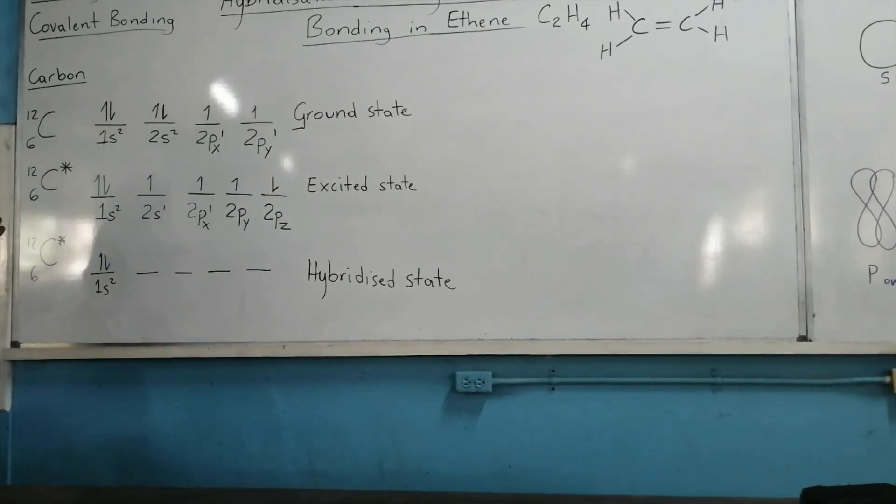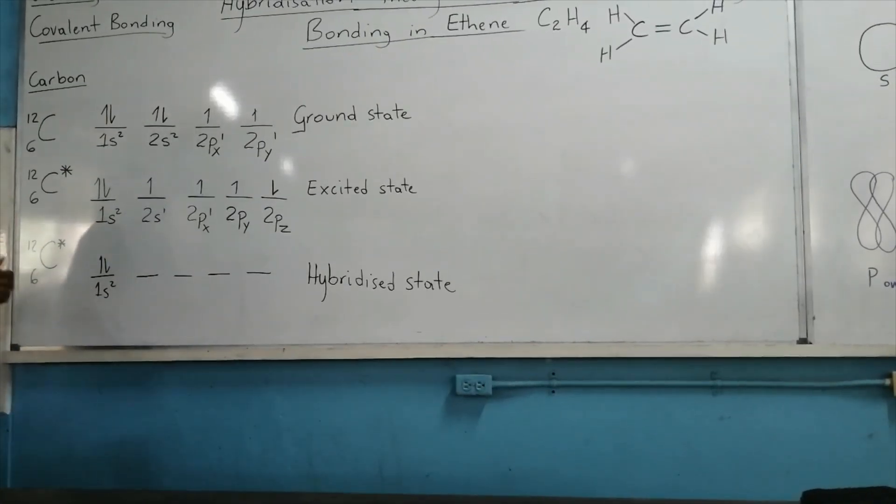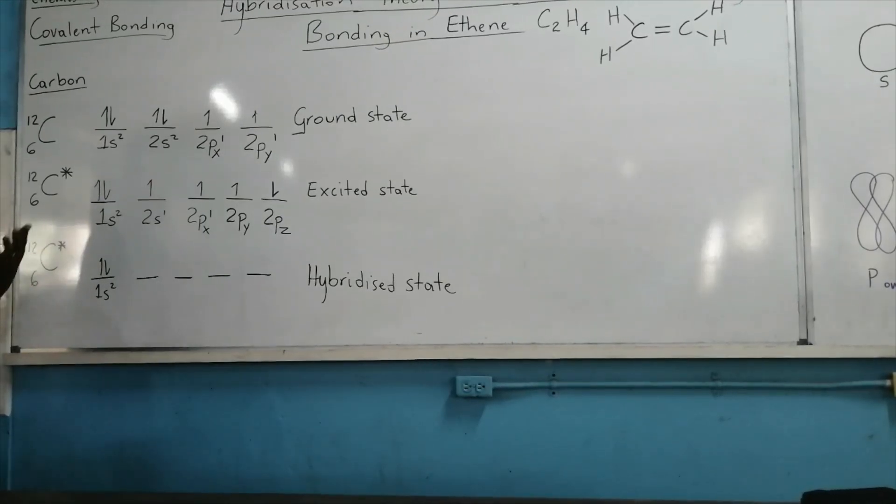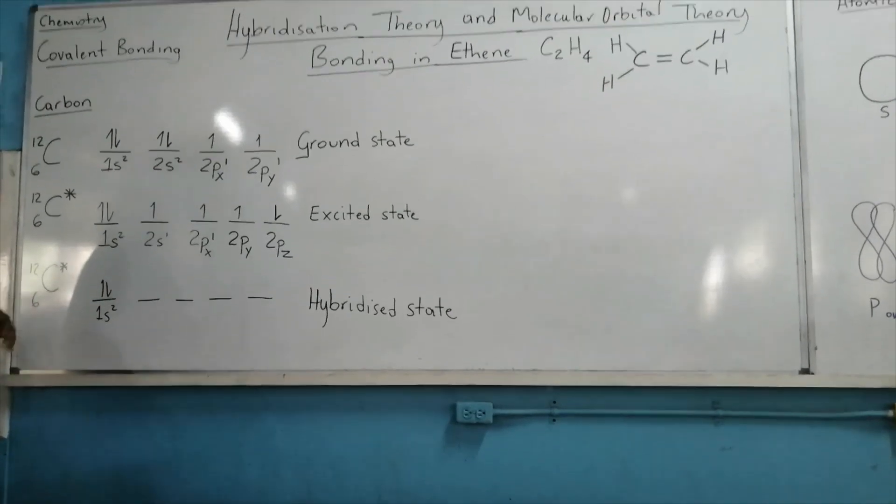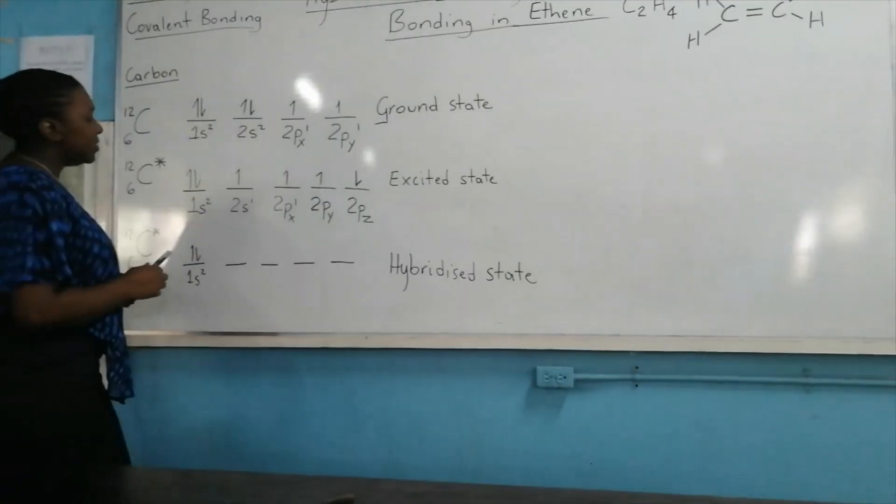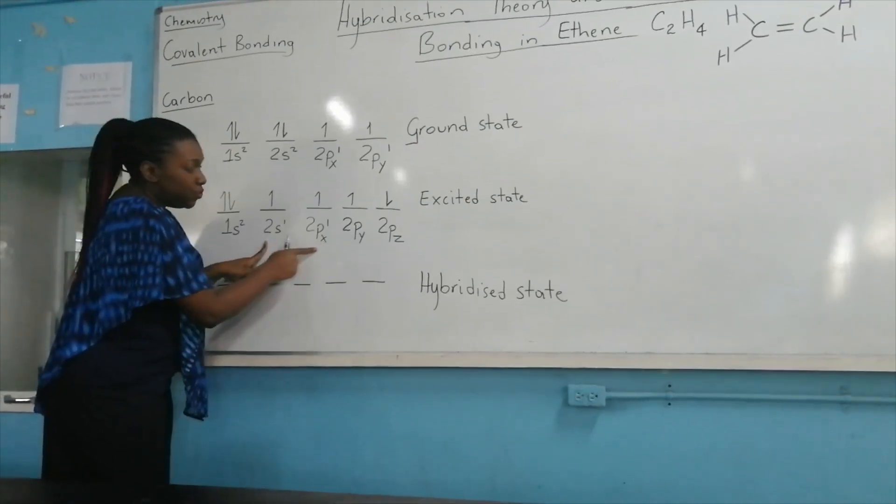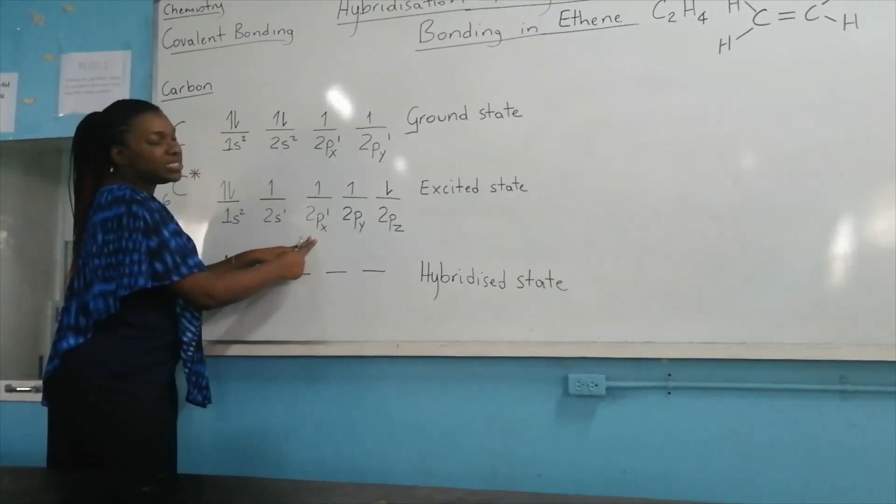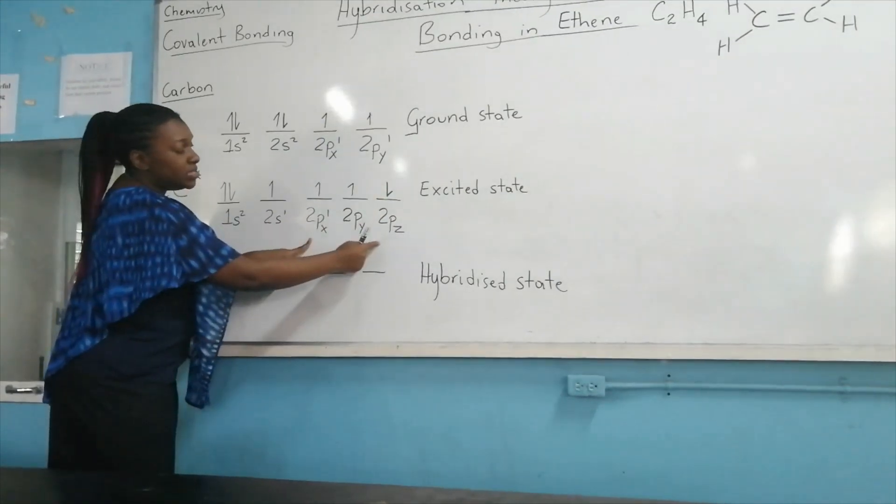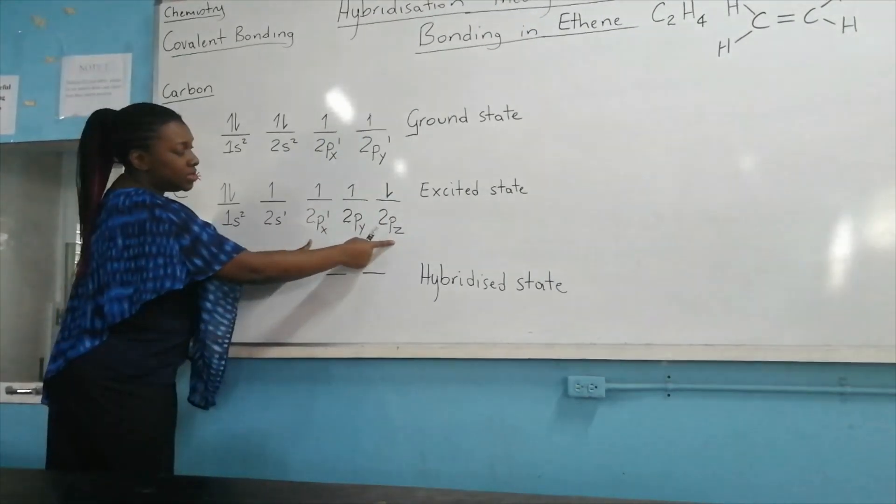In ethene, we have a double bond and a double bond is made from a pi bond and a sigma bond. So how is it that we create these pi bonds and sigma bonds? What happens is that this 2s orbital overlaps with two of the p-orbitals in the second energy level and an electron remains now in one of the p-orbitals.